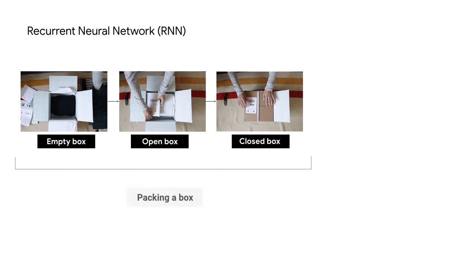RNNs can handle many types of input and output data. In this example of classifying videos, we train the RNN by passing it a sequence of frame descriptions: empty box, open box, closing box, and finally a label, packing.